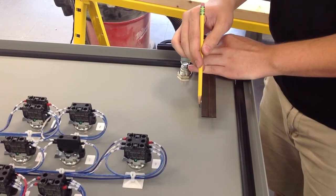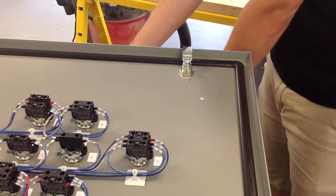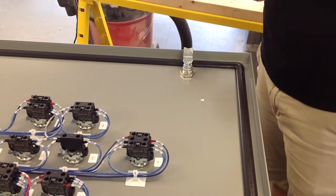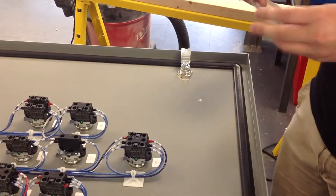After that, mark the center of that point. The disconnect that we're using has come with a template, so you need to apply the template according to the marks that you've made.